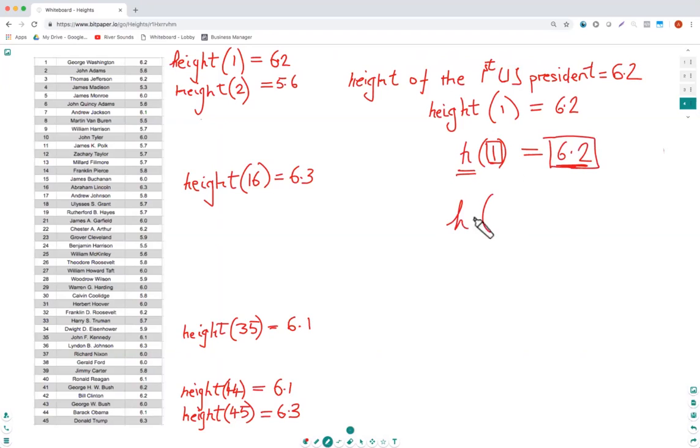You can even write g of 35 is equal to 6.1. It doesn't really matter what the h or g is, all that matters the most is what is inside here, the number of the president, and what is his height.